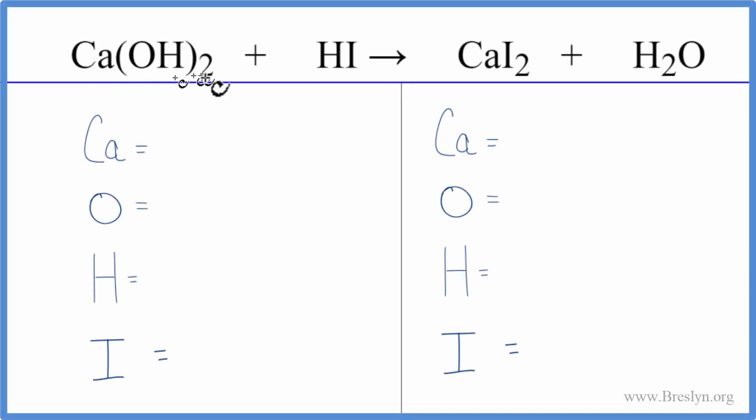In this video, we have Ca(OH)₂ plus HI. To balance it, let's add the atoms up on each side of the equation.